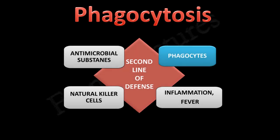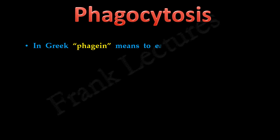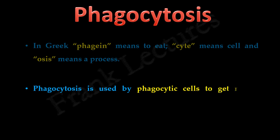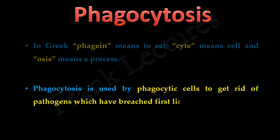Phagocytosis — we have used this term many times in our previous video lectures and we also know that phagocytosis forms part of the second line of defense. In Greek, phagin means to eat, cyte means cell, and osis means a process. So phagocytosis is a process of ingestion and uptake of microbes and other substances via cell. Phagocytosis is used by phagocytic cells of our immune system to get rid of pathogens which have breached the first line of defense.